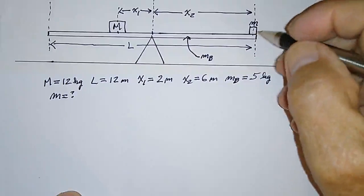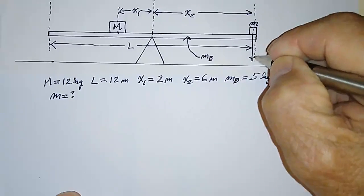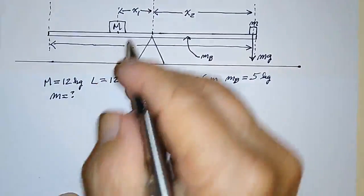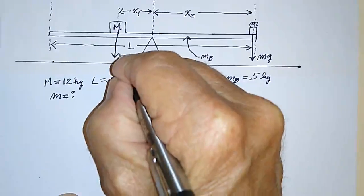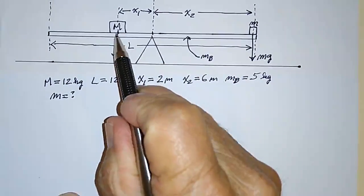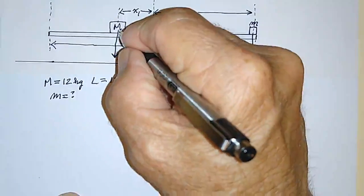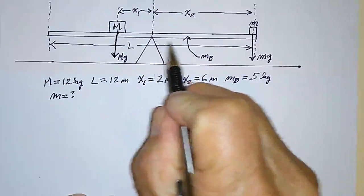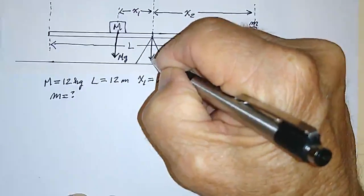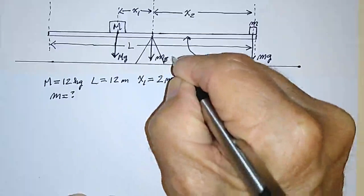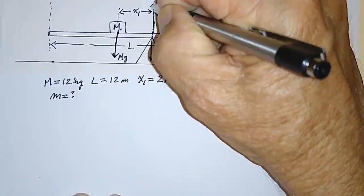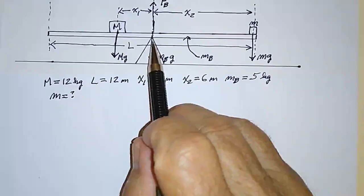Let's draw the forces on the picture. One force is from the little mass acting downward — that's just mg, where g is the acceleration due to gravity. The big mass M has a force acting downward too — that's Mg. Also, the weight of the board acts downward, which is m_b times g. And of course there is a force upward from the pivot — let's call that F_b.